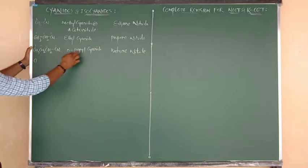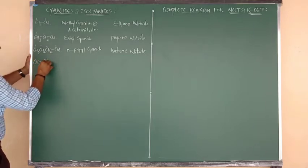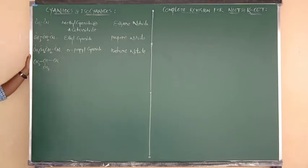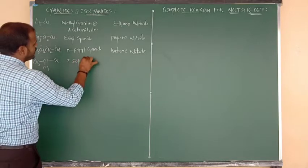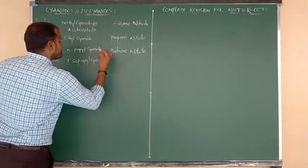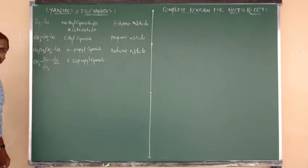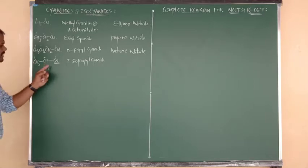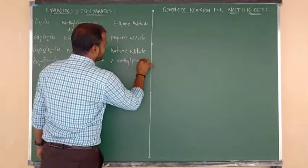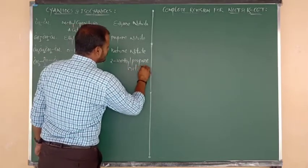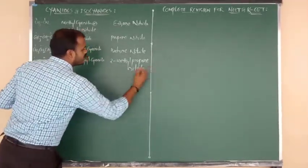Now converting n-propyl to isopropyl form: CH3-CH(CH3)-CN. The common name is isopropyl cyanide. For the IUPAC name, the functional group carbon is C1, and we have a methyl branch at C2 and C3. The IUPAC name is 2-methylpropanenitrile.